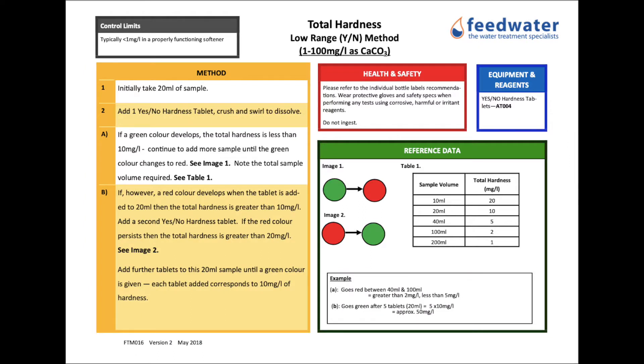Today we are going to demonstrate a field test method for measurement of low level hardness in water samples. This is a tablet method and the reference code for this method sheet should you need to request it is FTM60.